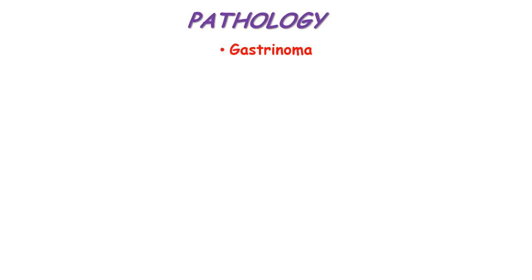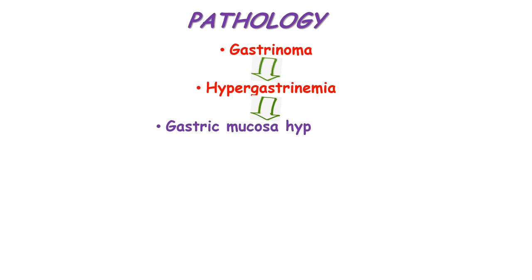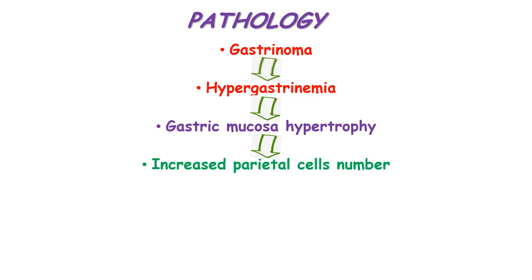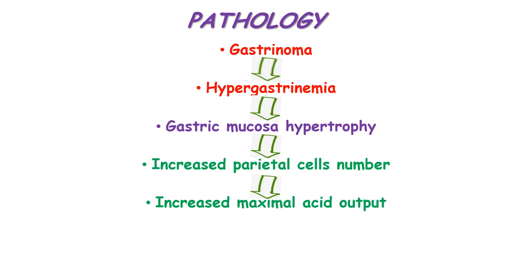In the pathophysiology of Zollinger-Ellison syndrome, a gastrinoma secretes excess gastrin hormone, causing hypergastrinemia. This hypergastrinemia causes the gastric mucosa to hypertrophy and increases the number of parietal cells — the cells that produce hydrochloric acid — leading to increased maximum hydrochloric acid output.